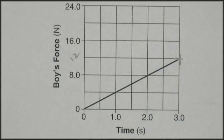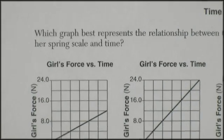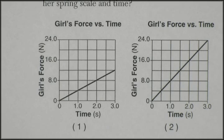The girl's graph is going to look exactly the same. Which graph represents the relationship between the magnitude of the girl's force? It's going to be exactly the same because for every applied force there's an equal and opposite reactionary force.